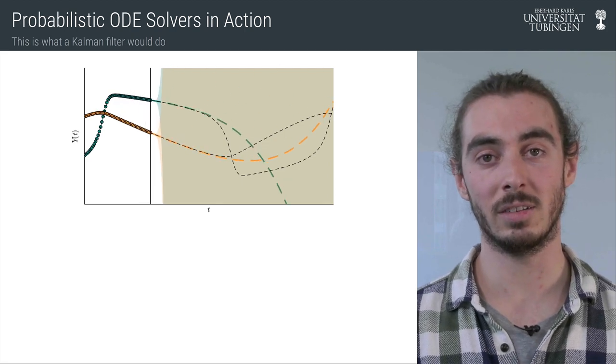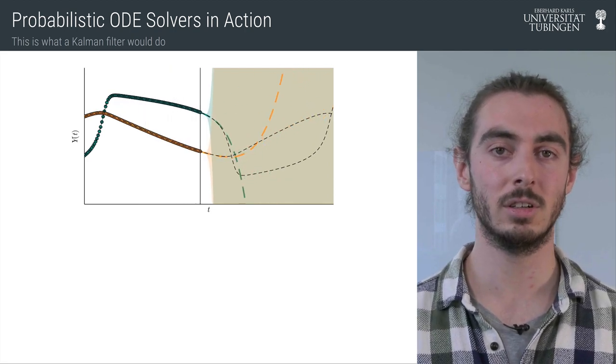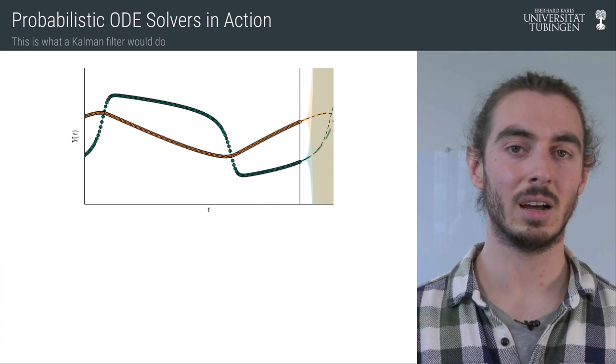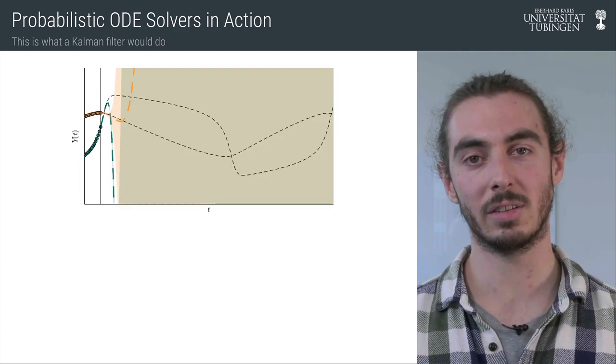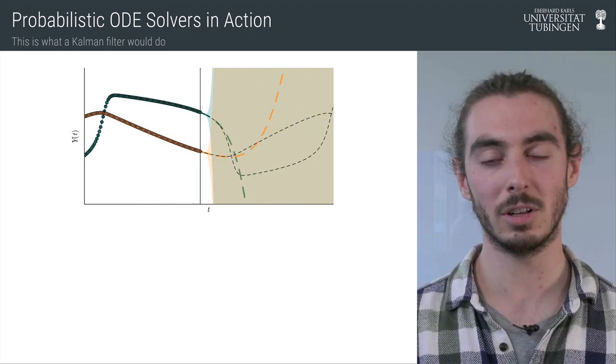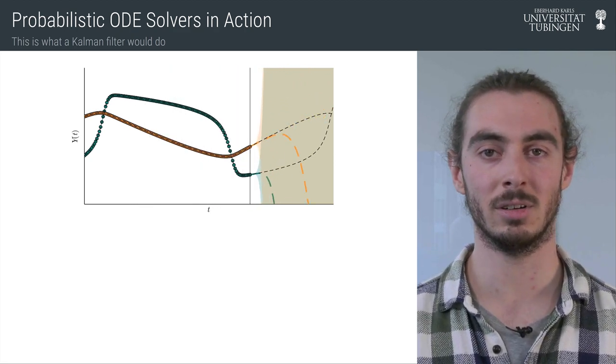But we also see that the extrapolations of the solver, shown as these colored dashed lines, are often quite accurate, but the uncertainties are very high. So the uncertainties do not accurately reflect the error of the solver.